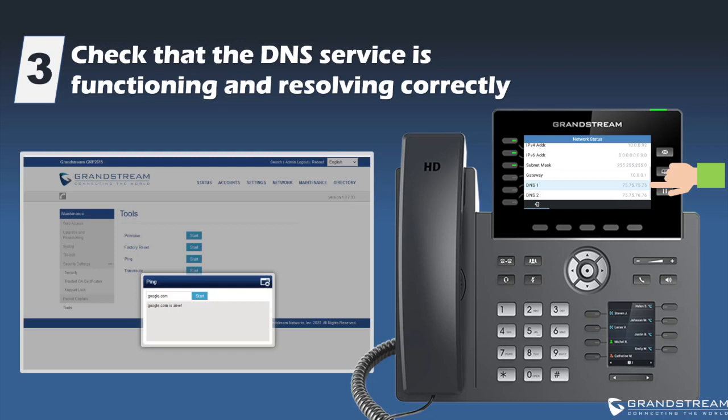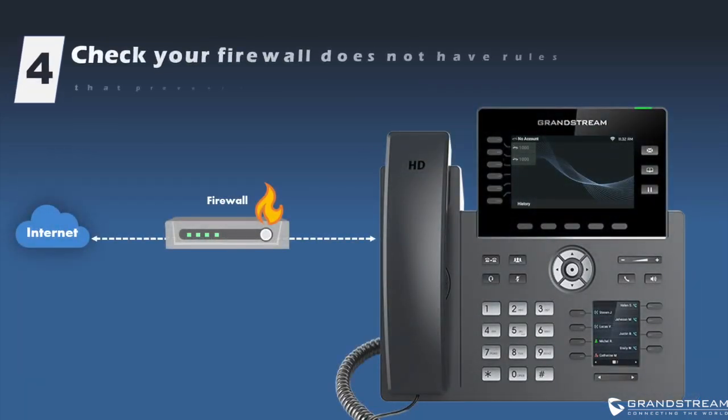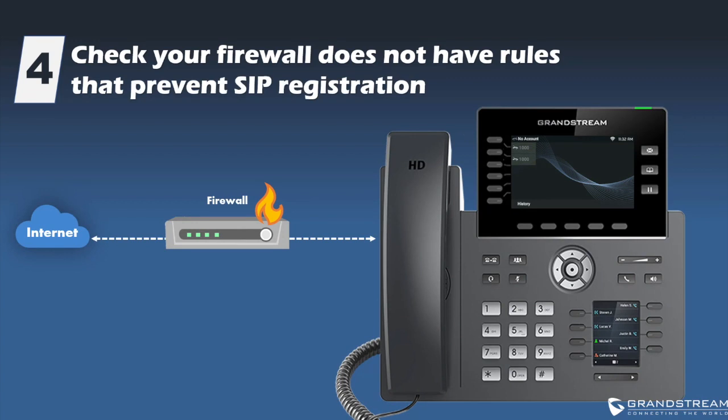If the ping is successful, the results should show the domain name is alive. If the domain name is not resolved, you can change the DNS information to one that is known to be working. You can also use the same ping tool to test if an IP address is reachable. If your network uses firewall rules for added security, check that the existing firewall rules do not block SIP registration. Also make sure SIP ALG is disabled on the firewall.